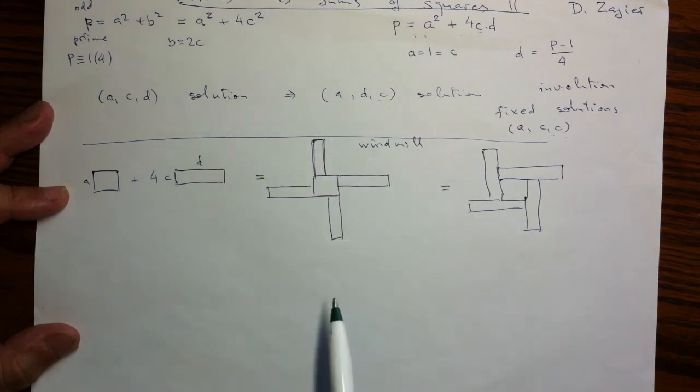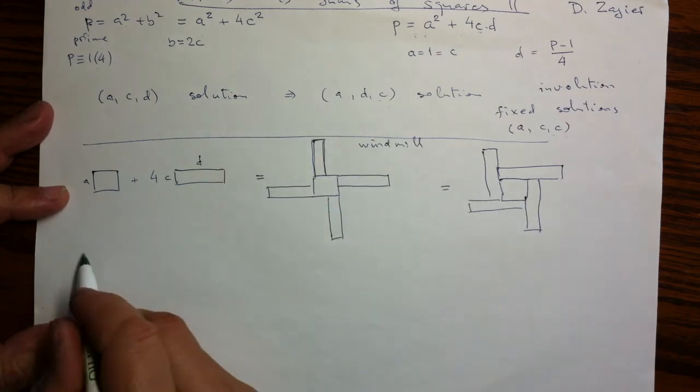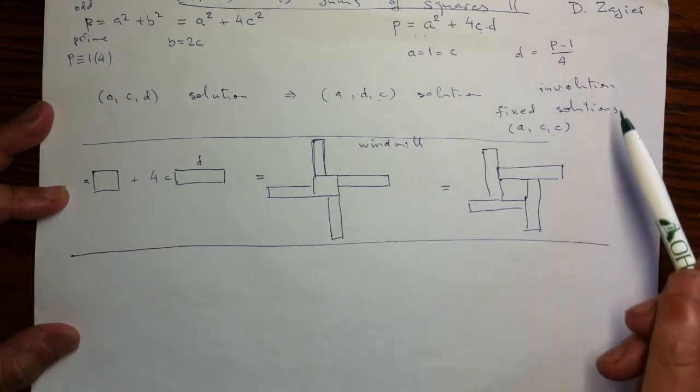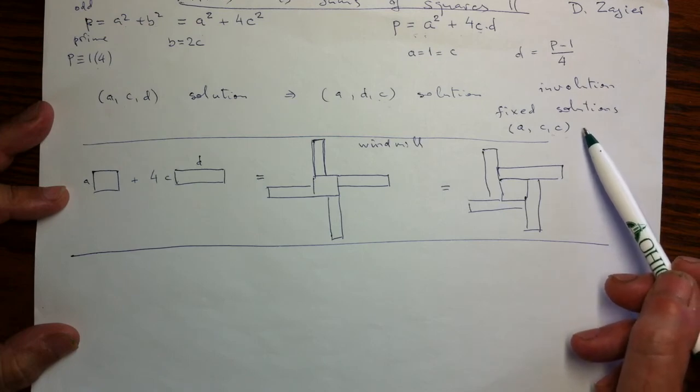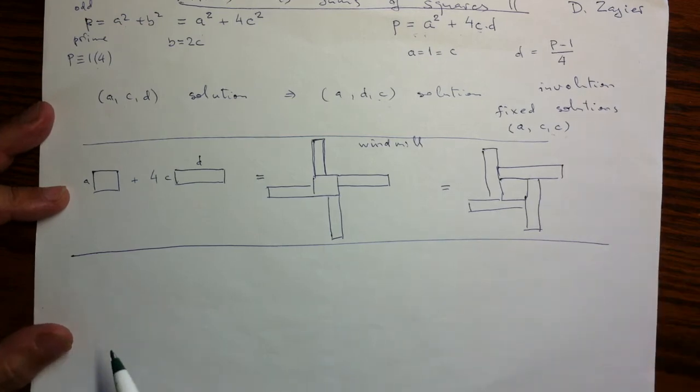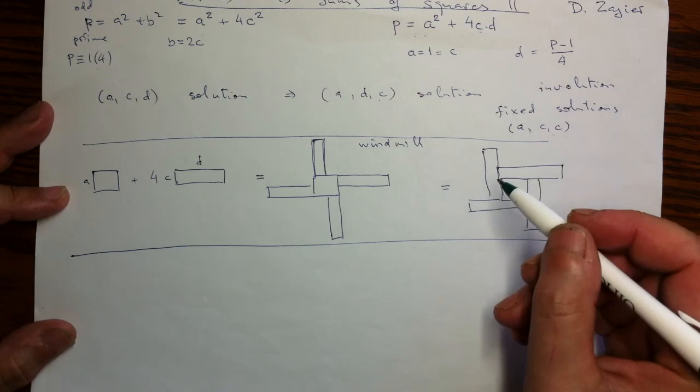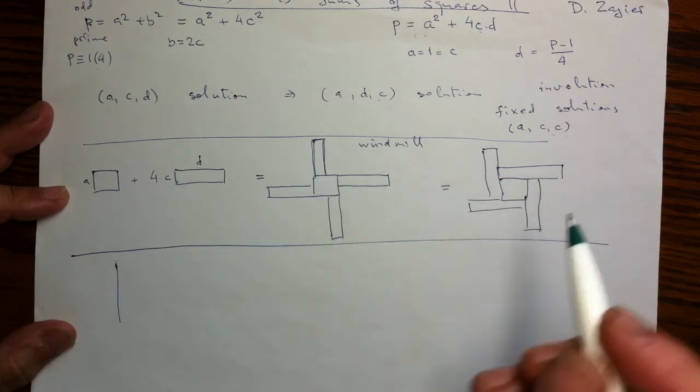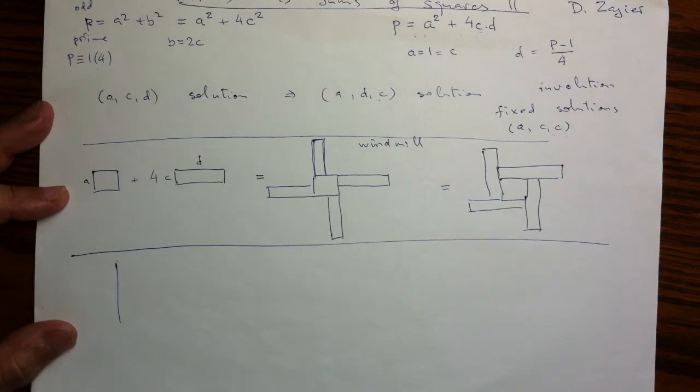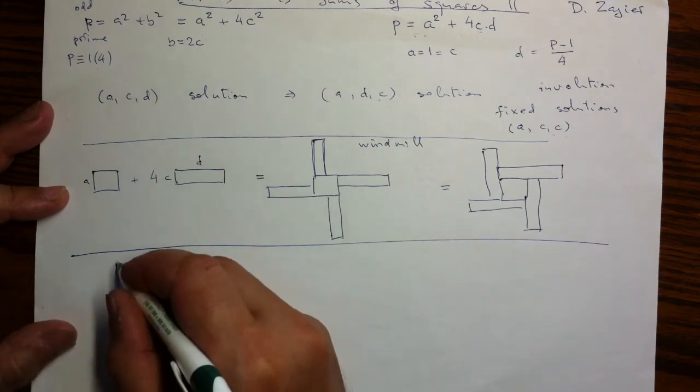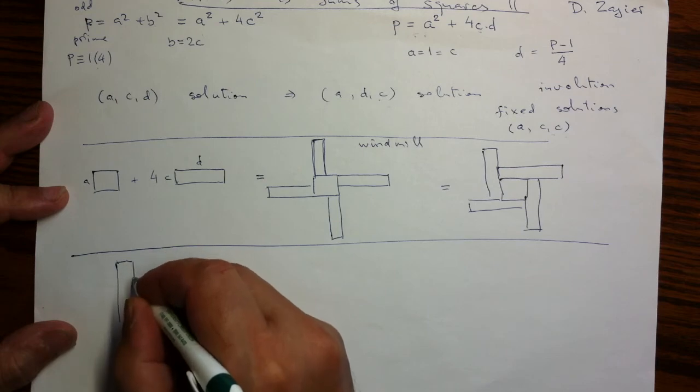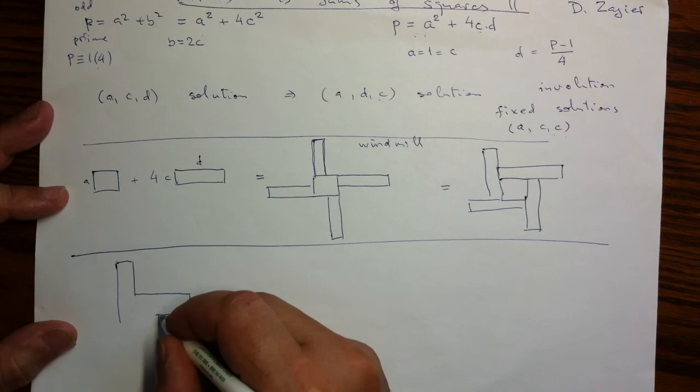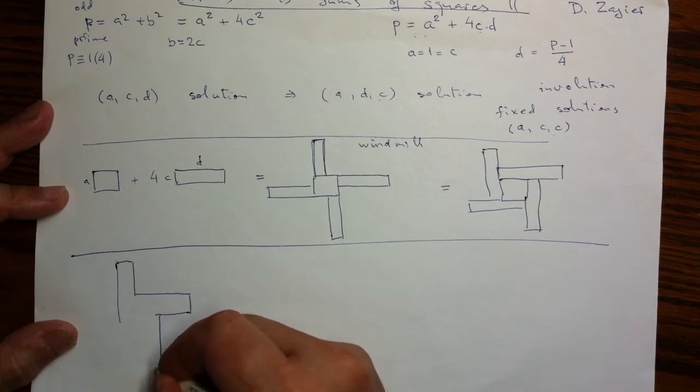The solutions of this equation are in one-to-one correspondence with these windmills with a fixed area. And this involution just changes one windmill into this other windmill. Let me describe the second involution which was introduced by Zagier which will guarantee that we have a solution. So the second involution starts with the shape. We fix the shape of a windmill. We don't look inside how it is separated into the inner square and the wings. So we just fix the shape.